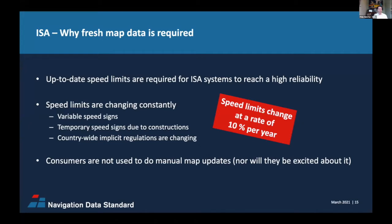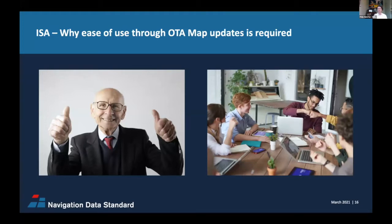You don't just need map data — you need this data to be regularly updated, because speed limits change at an average rate of 10% per year across Europe. Country-wide regulations can also change, as they did in France in 2019 and in the Netherlands last year. So not only do you want map data to support ISA, you also want up-to-date map data and a great user experience. Consumers expect technology to seamlessly support them, and they will not understand if they need to do a manual update by USB stick to keep the ISA feature working. That is exactly where NDS Live-based solutions provide a lot of benefits.